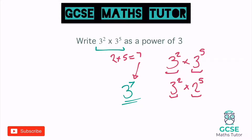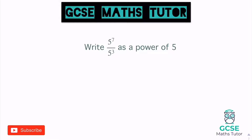Let's have a look at our second one. So there's the first one to remember: when you're multiplying, we can add the powers. So in this question, we are dividing. That's five to the power of seven divided by five to the power of three, written as a fraction. Remember, that fraction line means divide. And it wants us to write it as a power of five.